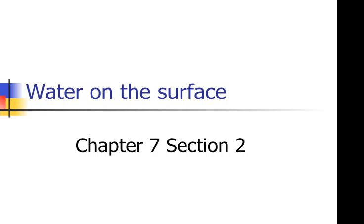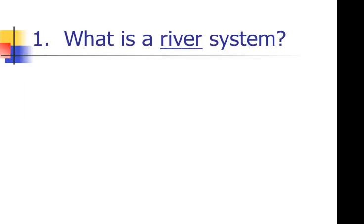We're going to talk about water on the surface today — this is Chapter 7, Section 2. Yesterday we talked about the water cycle and drew graphics about it. Now we're going to talk about what happens when the water actually hits our surface. Number one: what is a river system? I don't know whether the sheet in front of you has the same underlined items as this PowerPoint.